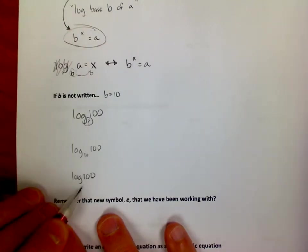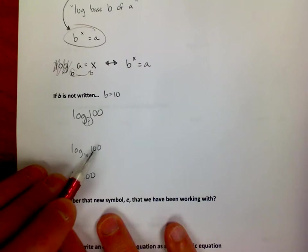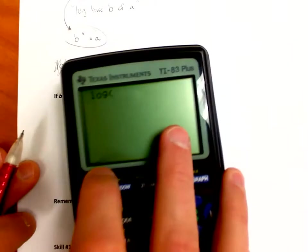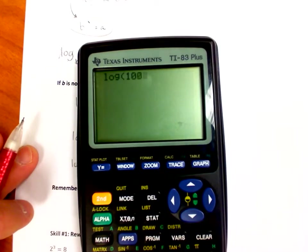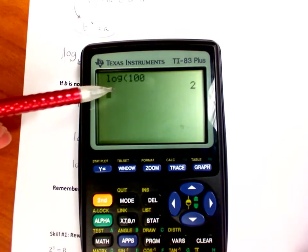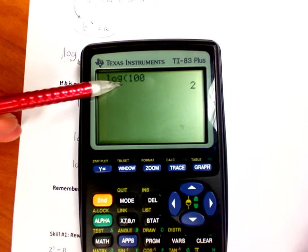That's saying 10 to what power gives me 100, and shouldn't that be 10 squared? Shouldn't I get a 2? Notice what happens on my calculator if I type in log of 100, it tells me 2.